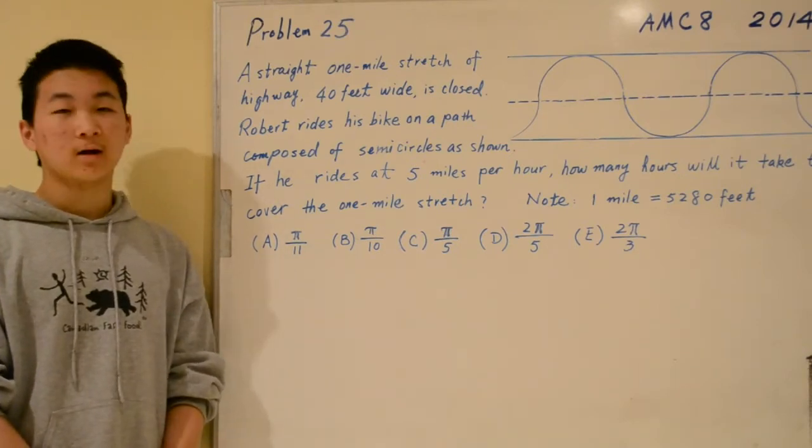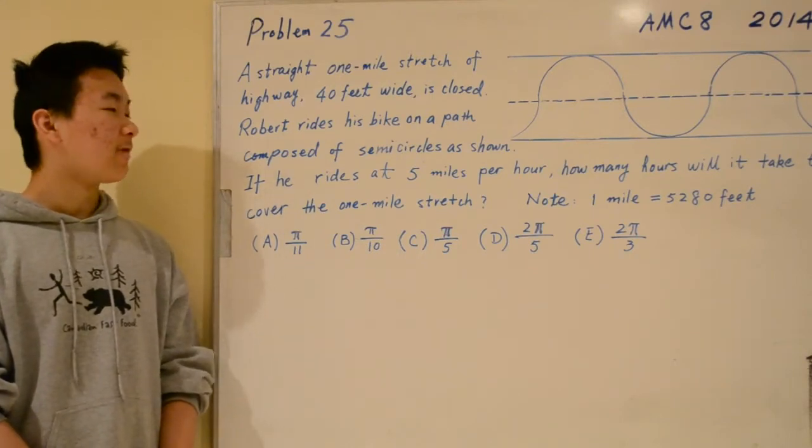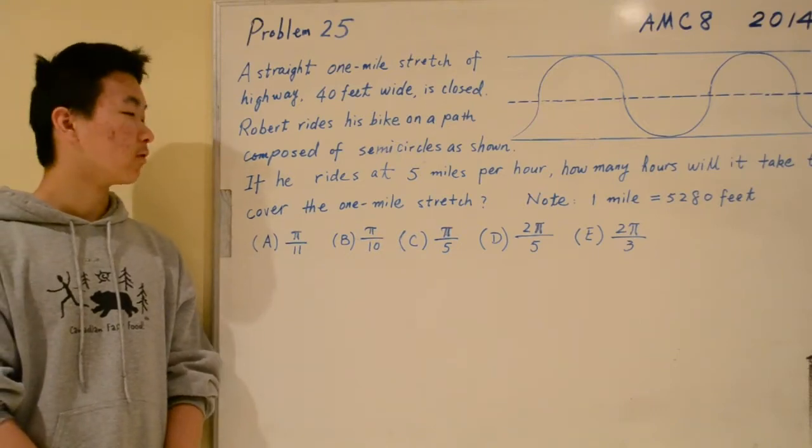Robert rides his bike on a path composed of semi-circles as shown. If he rides at 5 miles per hour, how many hours will it take to cover the 1 mile stretch?